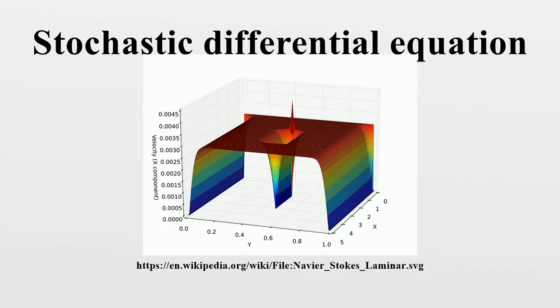The equation above characterizes the behavior of the continuous time stochastic process xt as the sum of an ordinary Lebesgue integral and an Ito integral. A heuristic interpretation of the stochastic differential equation is that in a small time interval of length delta the stochastic process xt changes its value by an amount that is normally distributed with expectation mu delta and variance sigma squared delta and is independent of the past behavior of the process.